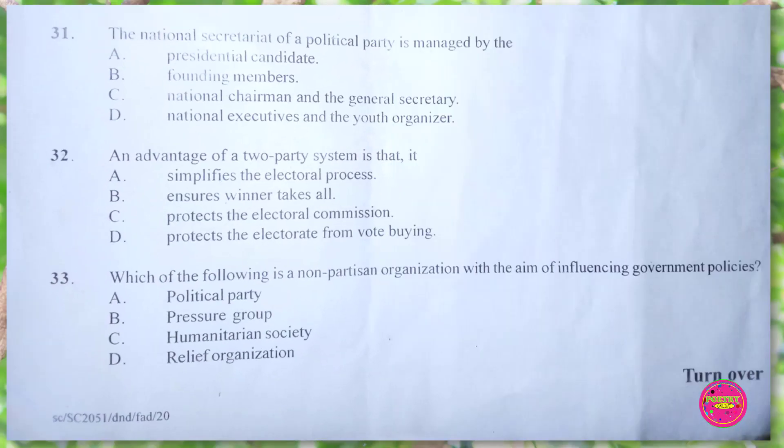Question 32. An advantage of a two-party system is that it: A. simplifies the electoral process, B. ensures winner takes all, D. protects the illiterates from vote-buying. The correct answer is A. simplifies the electoral process.